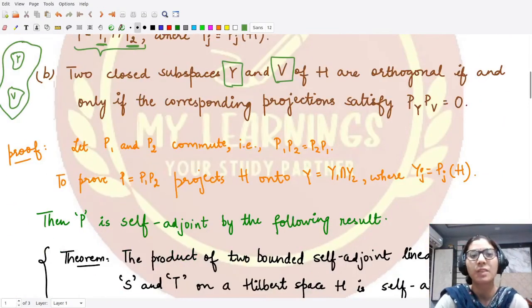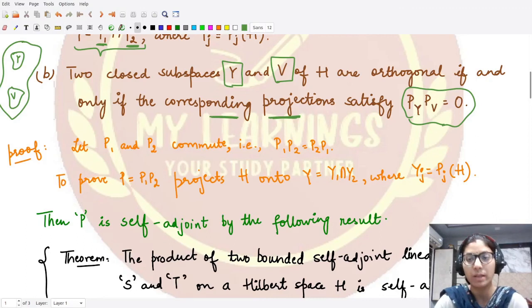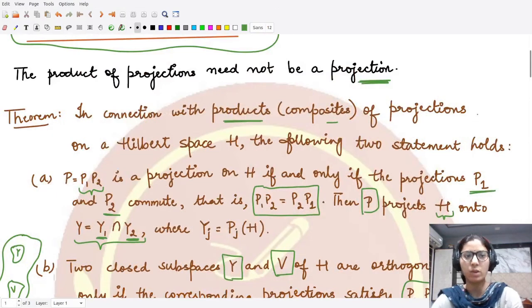...whenever the corresponding projections satisfy this: the projection onto Y and the projection onto V, when multiplied together, result into zero. And what is this zero? This is the zero operator. So this is the result in this particular case.